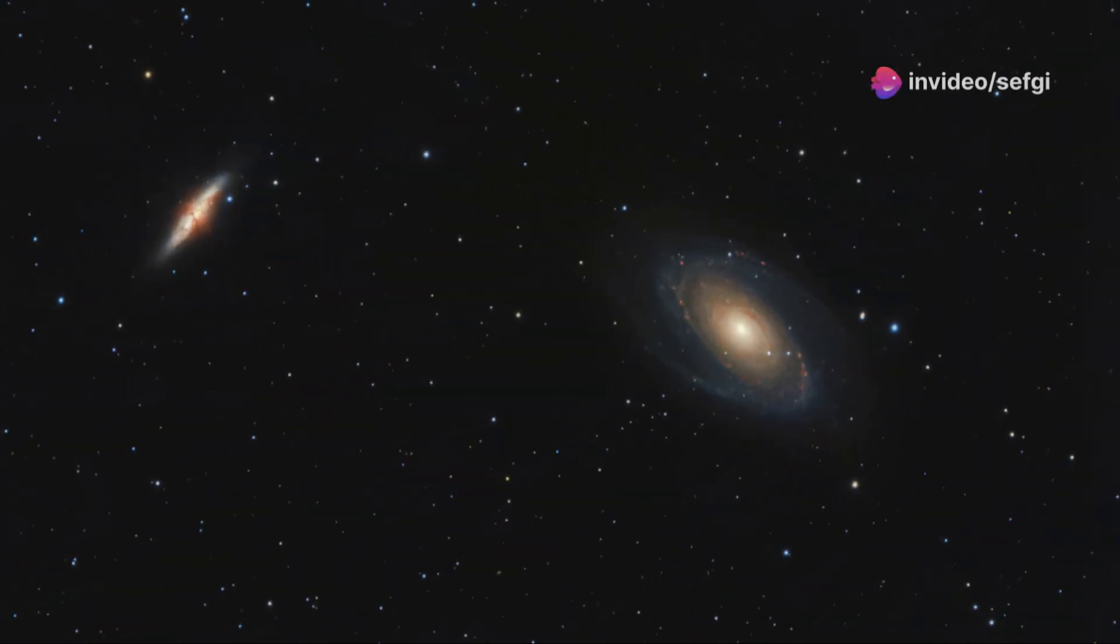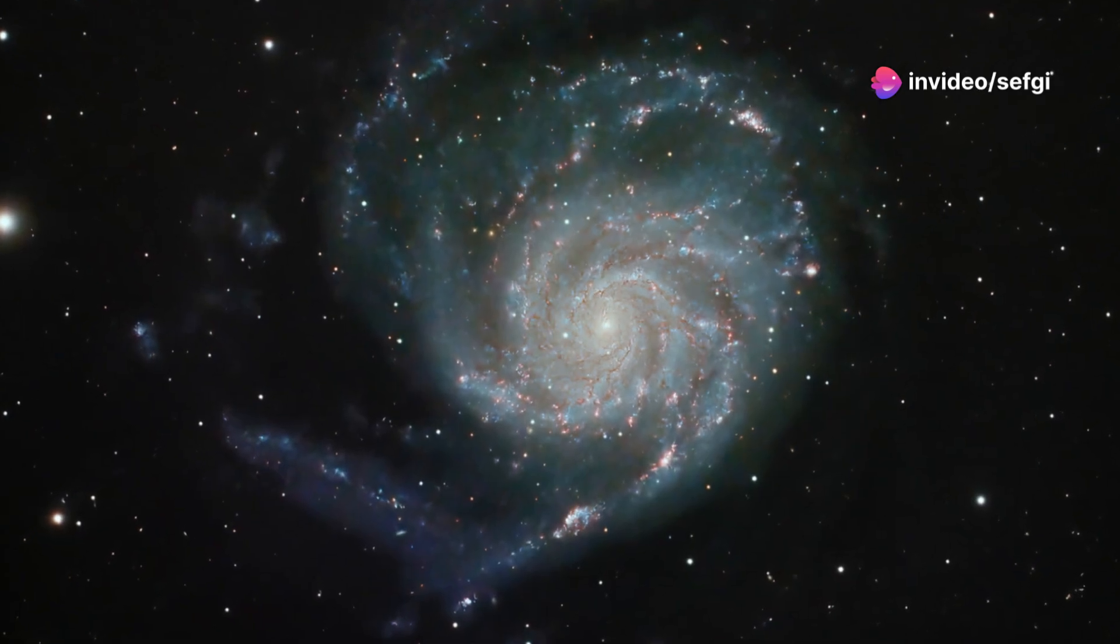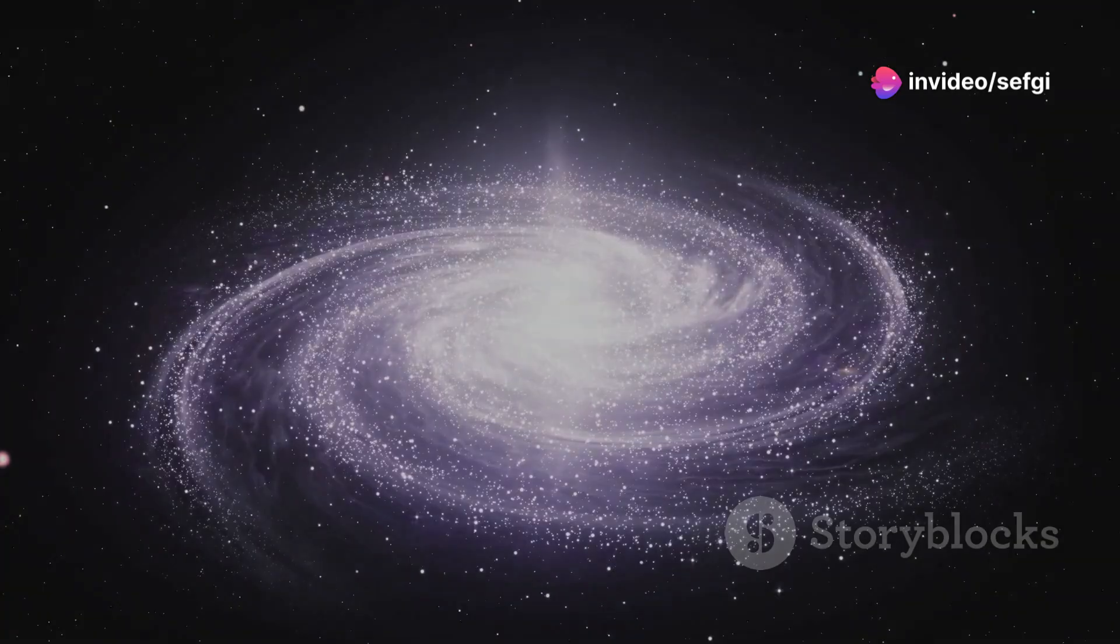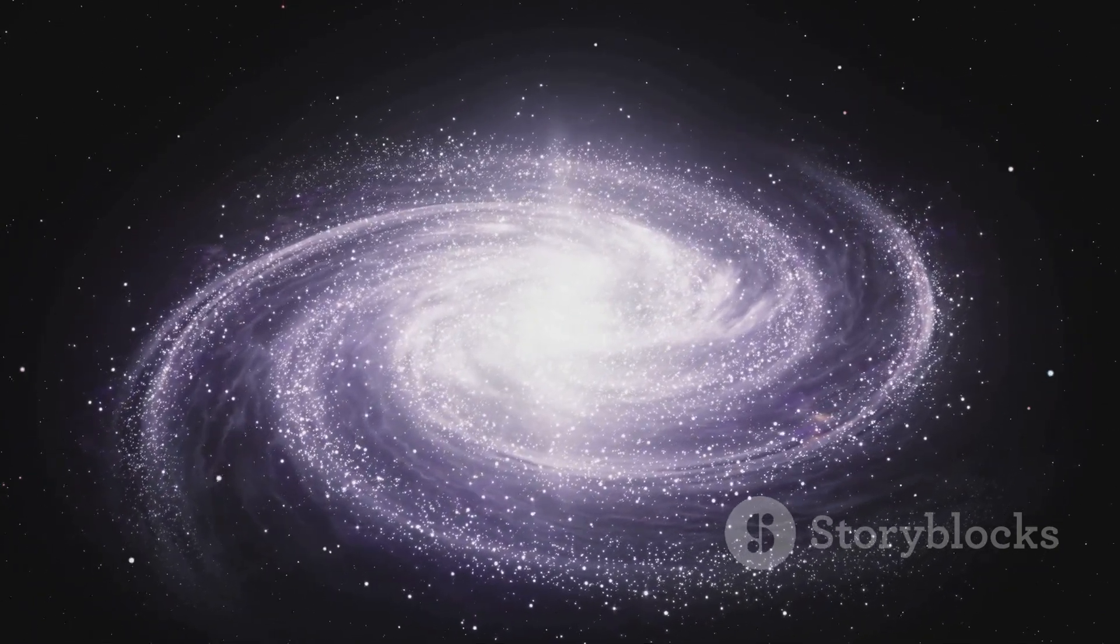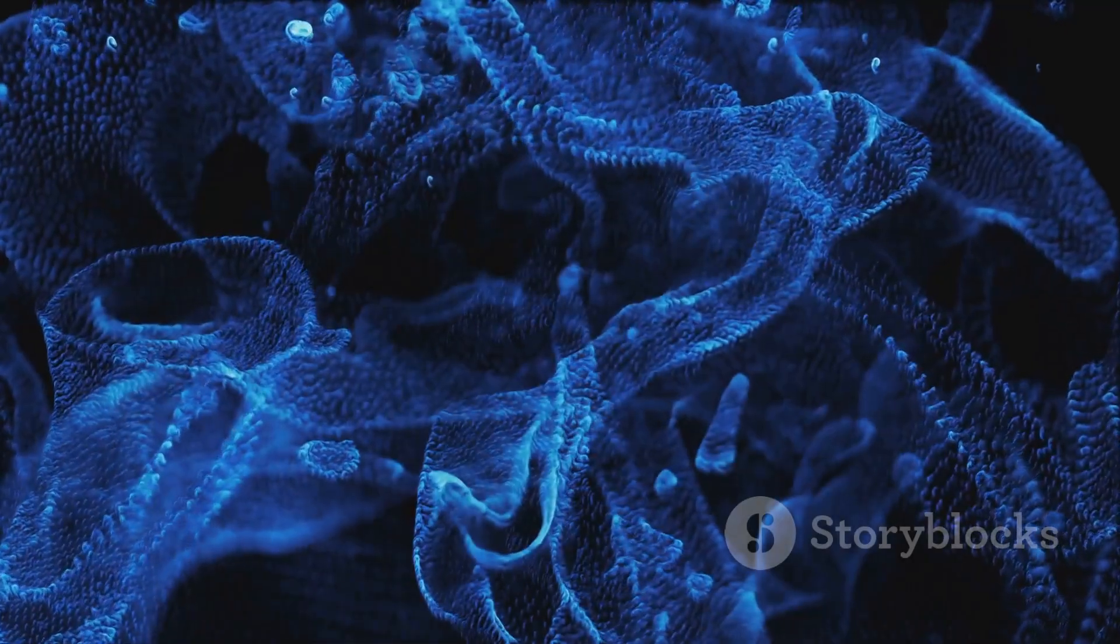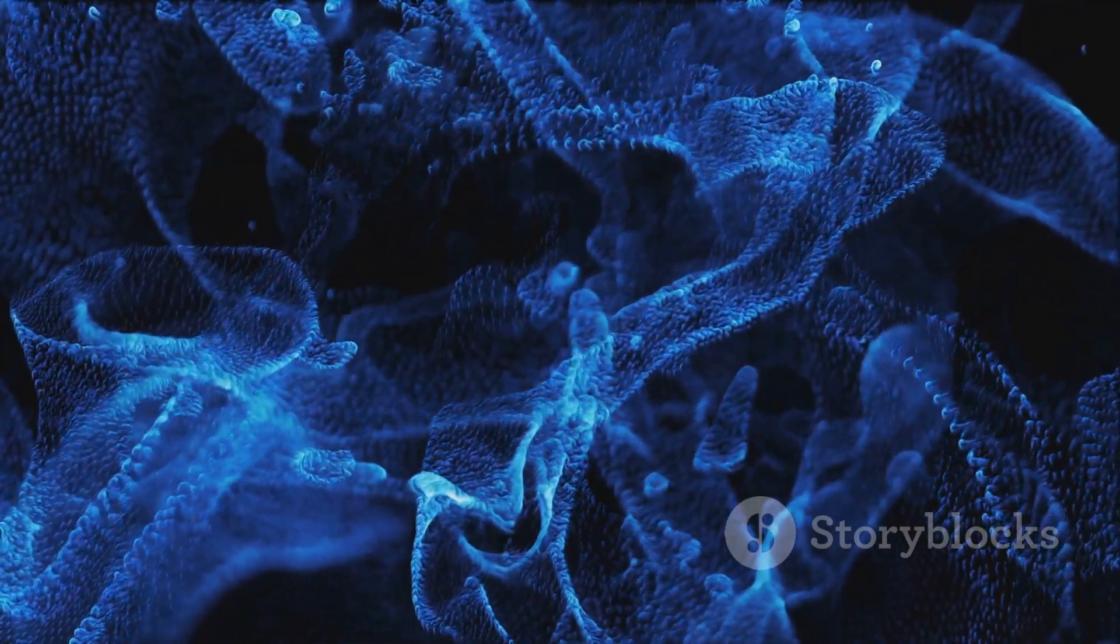Dark matter, invisible to telescopes, reveals its presence through its gravitational pull on visible matter. It acts like an invisible scaffolding, holding galaxies together and influencing their movements. Scientists believe it's made of particles unlike any we've ever observed.